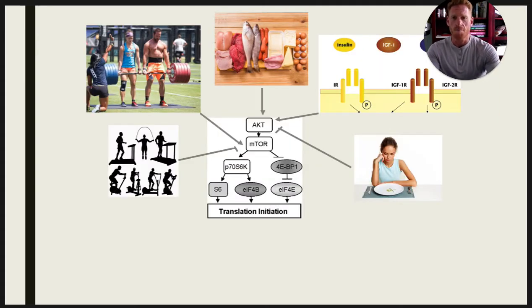In the traditional model, tension created by lifting weights or working against some sort of external resistance, nutrition, amino acids, and a variety of hormones all act upon the AKT mTOR pathway, either directly to mTOR or indirectly, to initiate translation and protein synthesis.